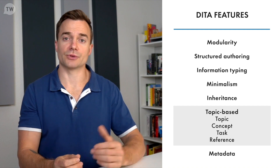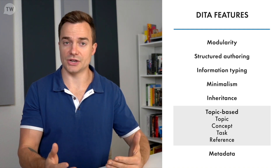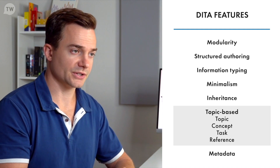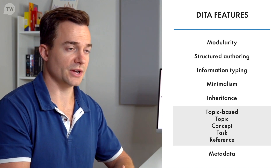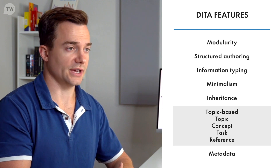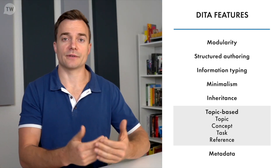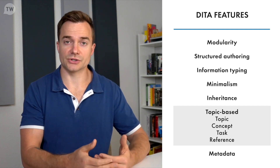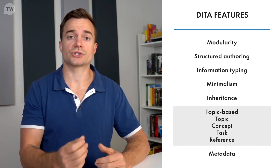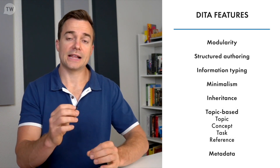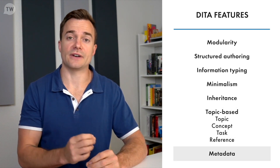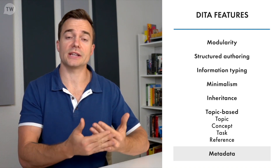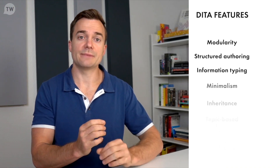Then we have topic-based architecture, which allows information reuse and makes translation and localization more efficient. DITA defines four types of topics. A topic provides a generic structure for information. The first is concept, which contains background information and examples. Next is tasks, which includes procedures. Then we have reference, which describes commands, parameters, and other features. Last is metadata.